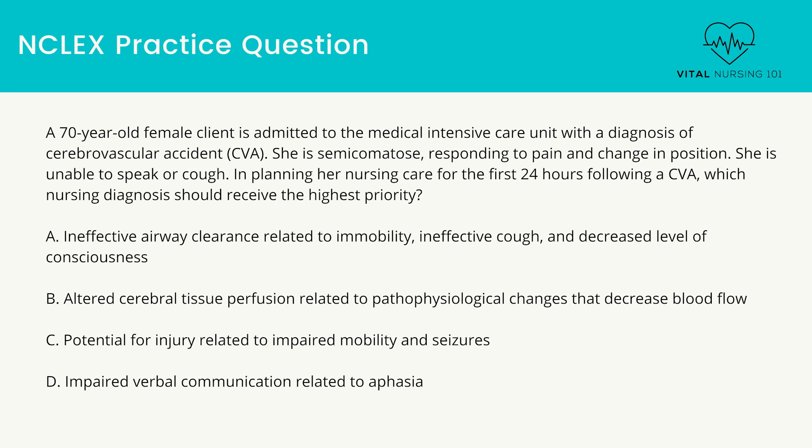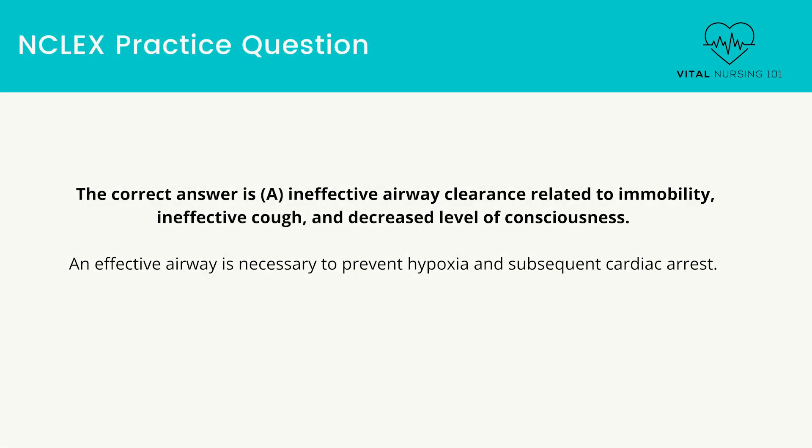Altered cerebral tissue perfusion related to pathophysiological changes that decrease blood flow. Potential for injury related to impaired mobility and seizures. Impaired verbal communication related to aphasia. The correct answer is ineffective airway clearance related to immobility, ineffective cough, and decreased level of consciousness. An effective airway is necessary to prevent hypoxia and subsequent cardiac arrest.